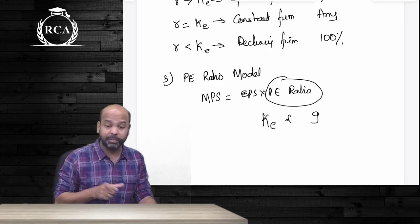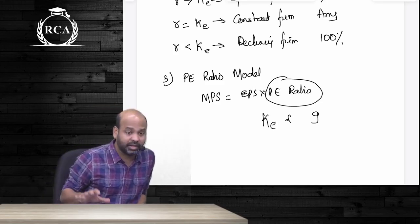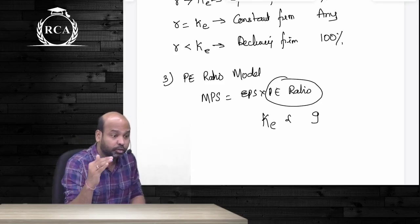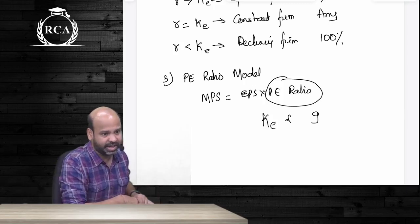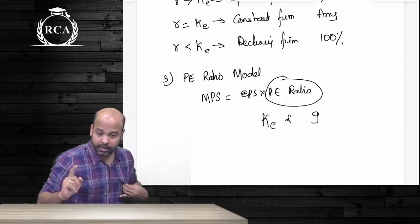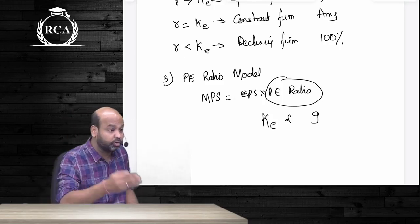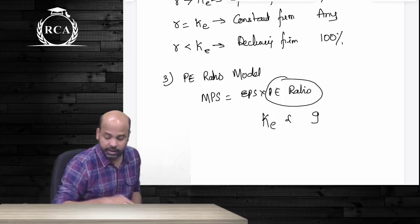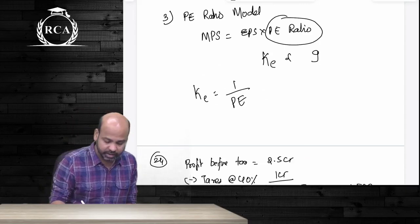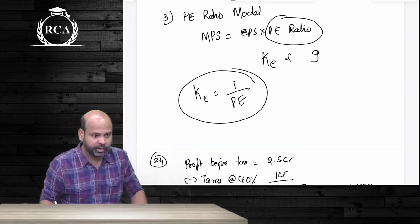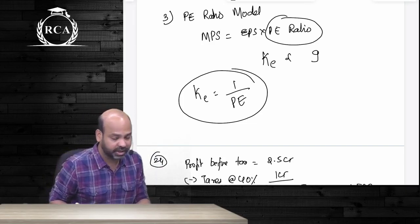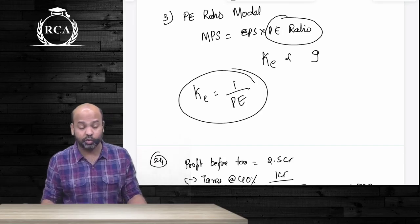In case cost of equity is not given and you must compute it using Walter's model, you can write cost of equity = 1 divided by PE ratio. However, this relationship applies only in a hypothetical situation where growth rate is 0 and 100% of earnings are distributed as dividends. Only in that scenario does cost of equity equal 1 divided by PE ratio. This derivation was also done in class.